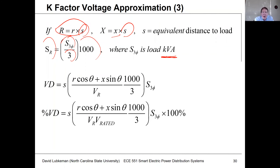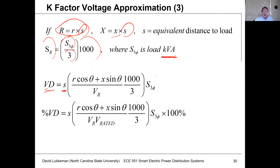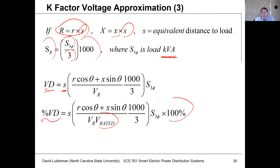When we break the net resistance and reactance into a line length times an equivalent resistance and reactance per unit length, the voltage drop becomes the equivalent line length times the quantity (r cosine theta plus x sine theta) over VR, times 1,000 over 3, times S3-phase. To normalize in terms of percent voltage drop, we divide by the nominal line-to-neutral voltage V-rated and multiply by 100%.